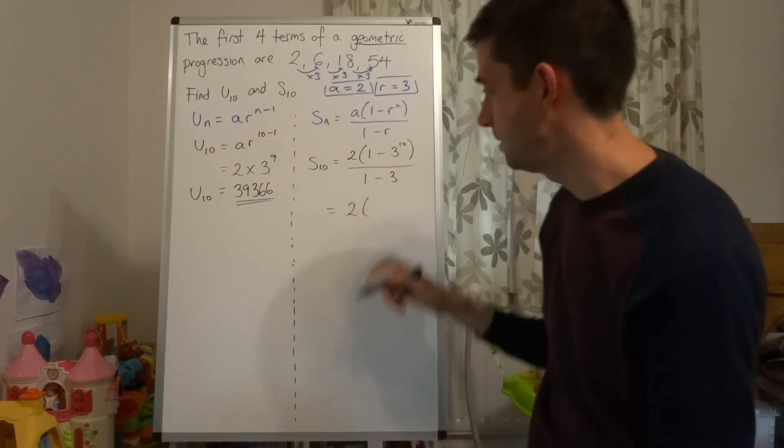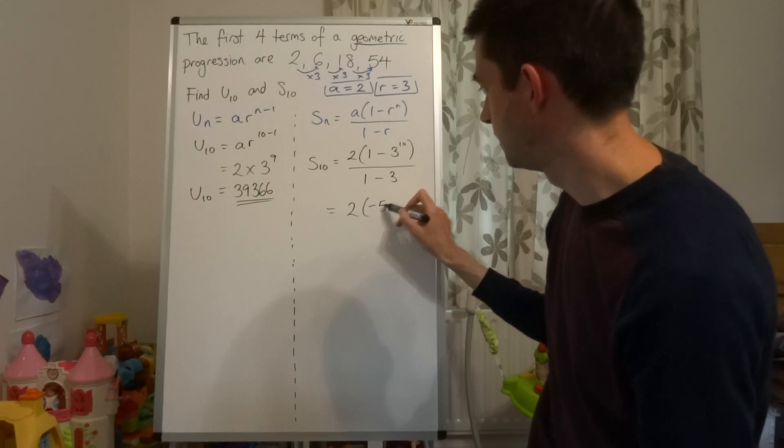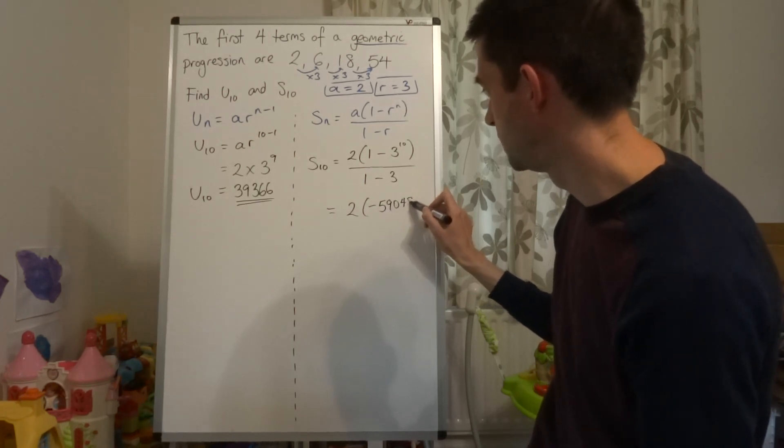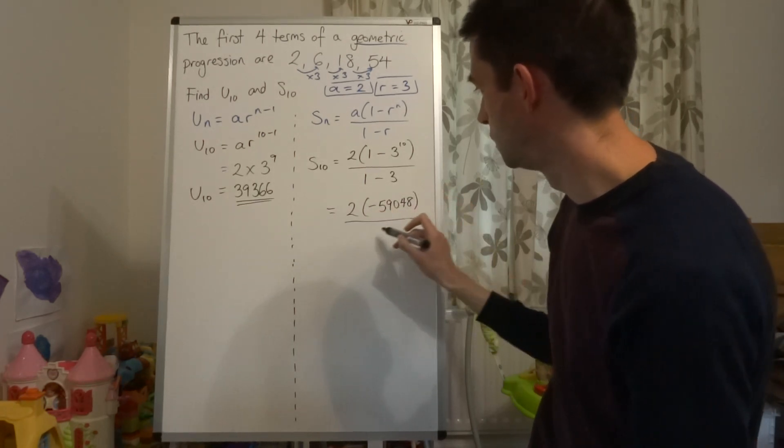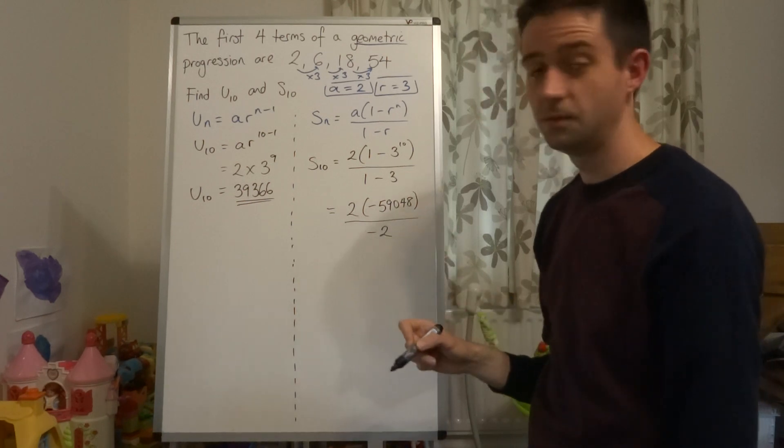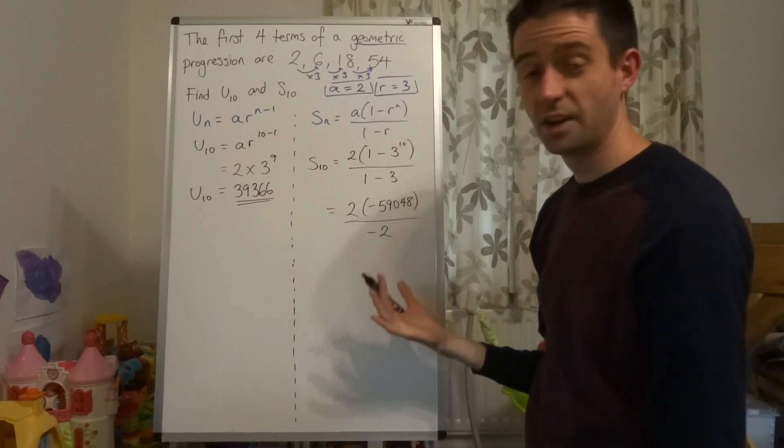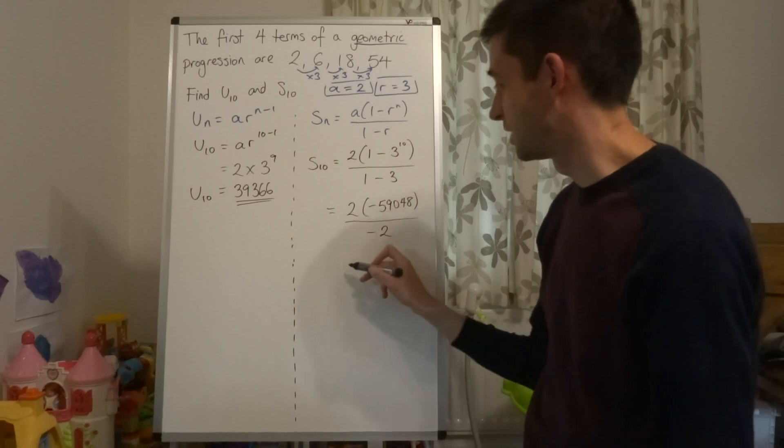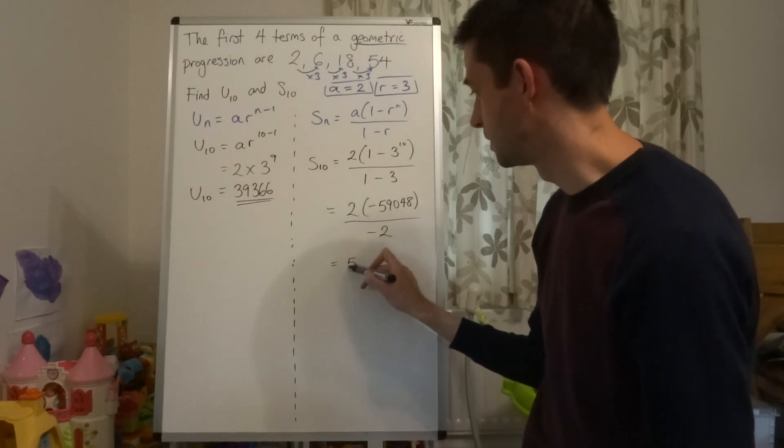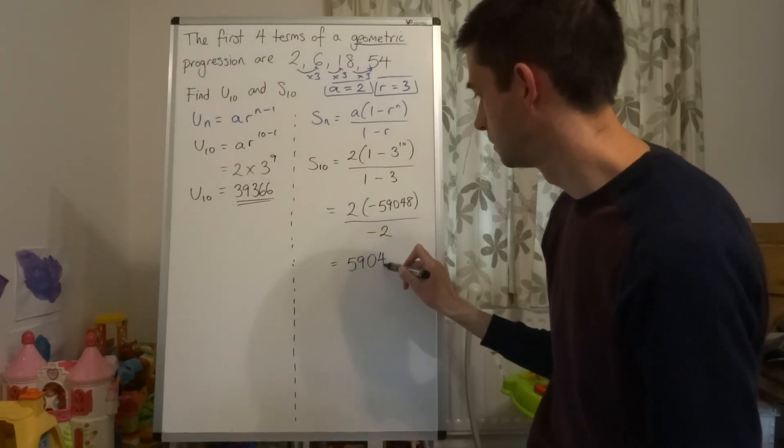1 minus 3 to the power of 10, which is negative 59,048, and that's all going to be over negative 2. And I can see by a rather beautiful bit of cancelling that that's just going to come out as 59,048.